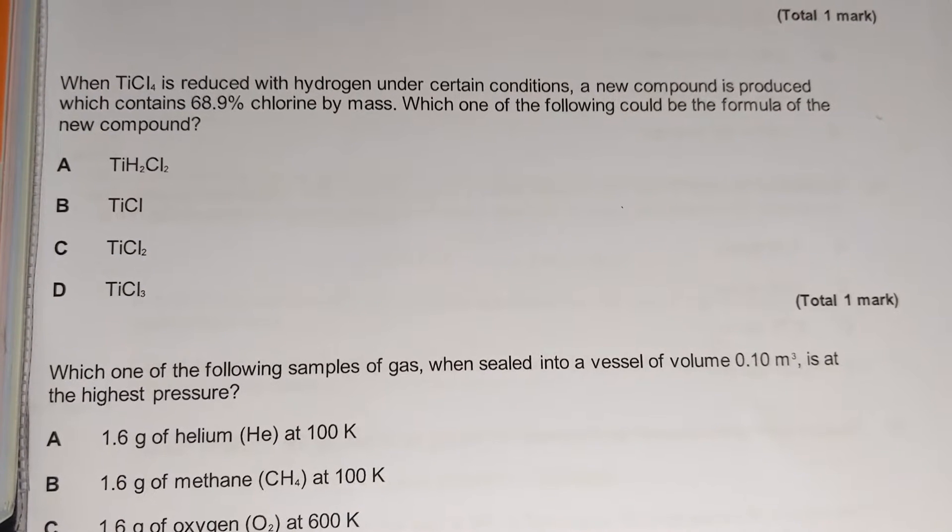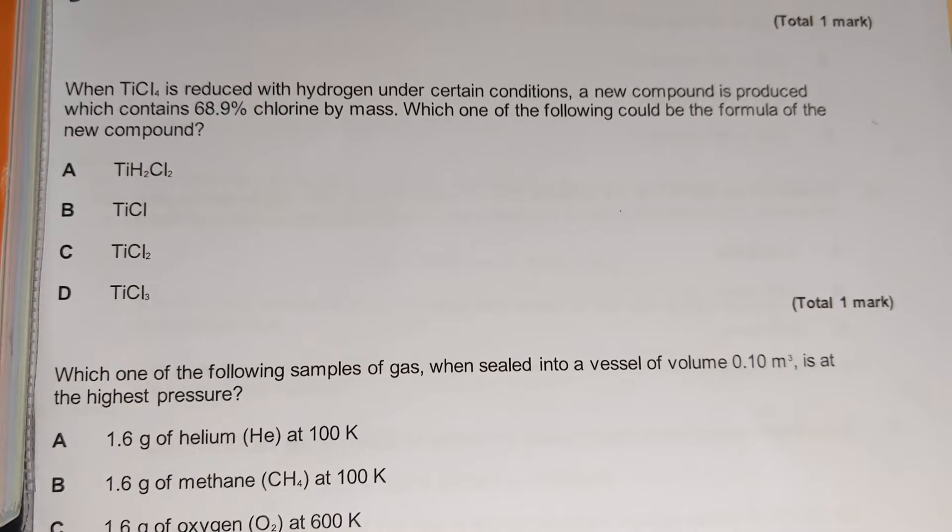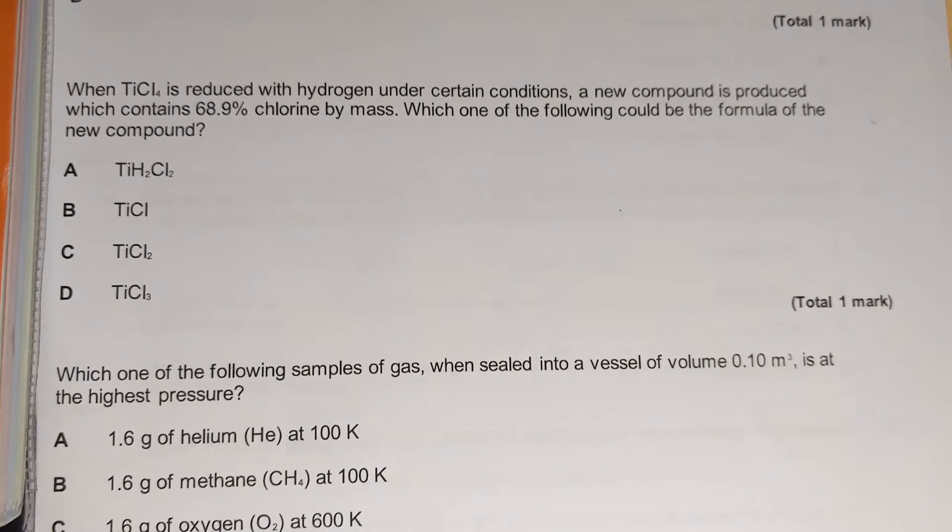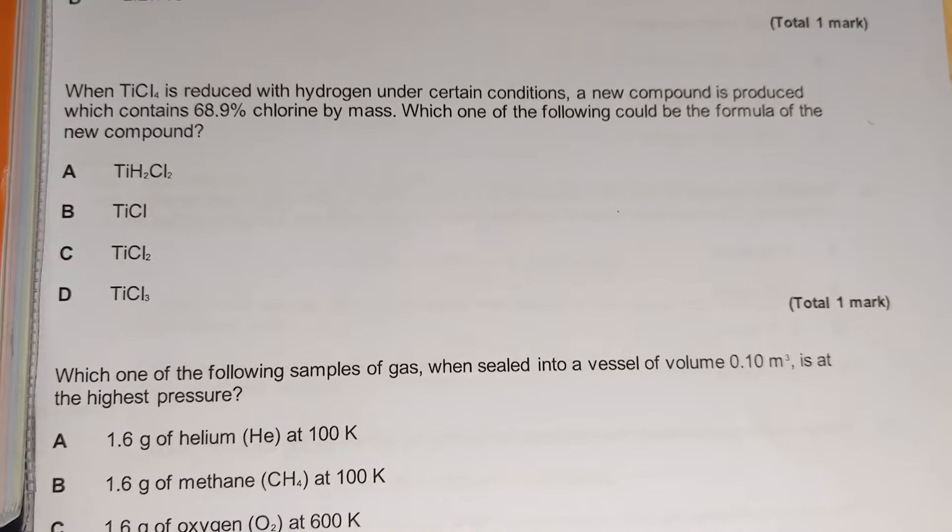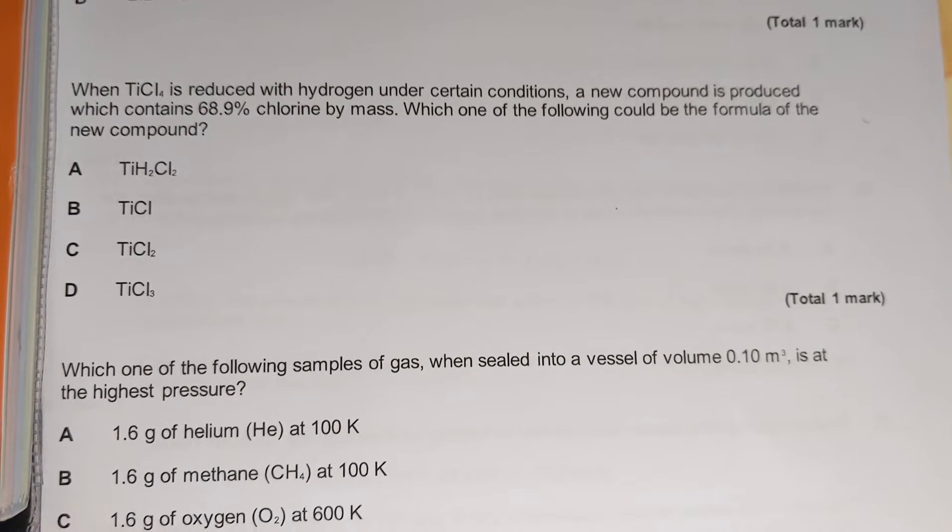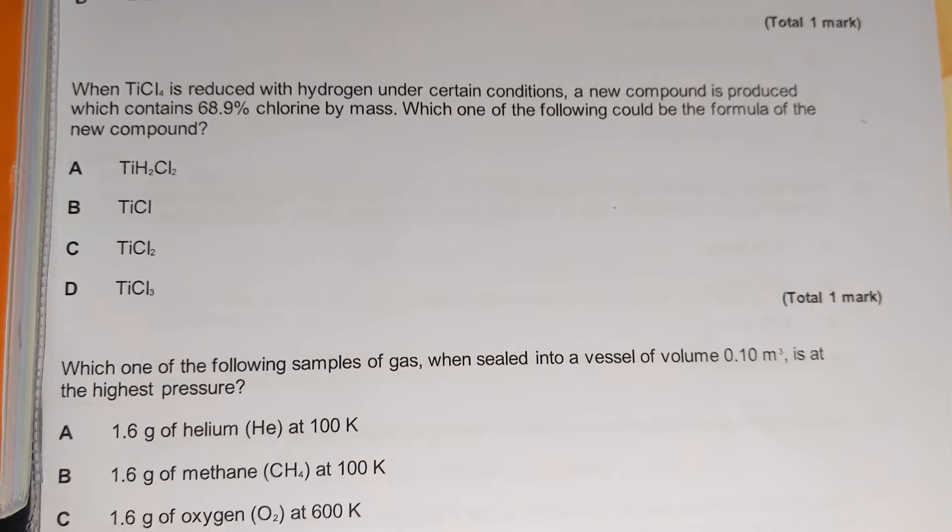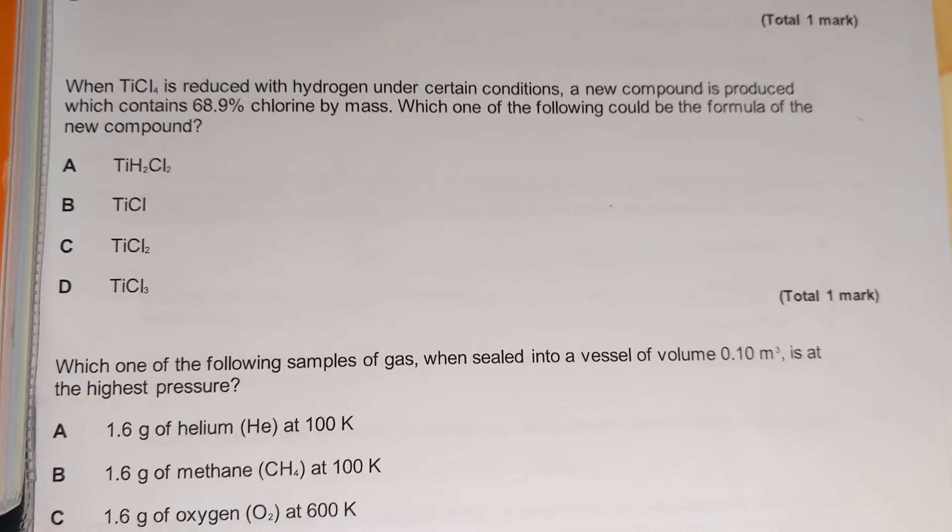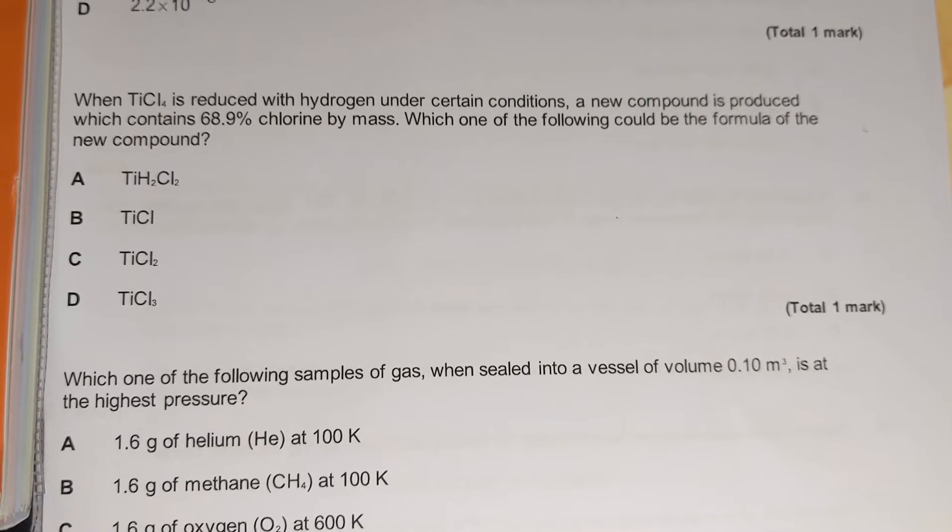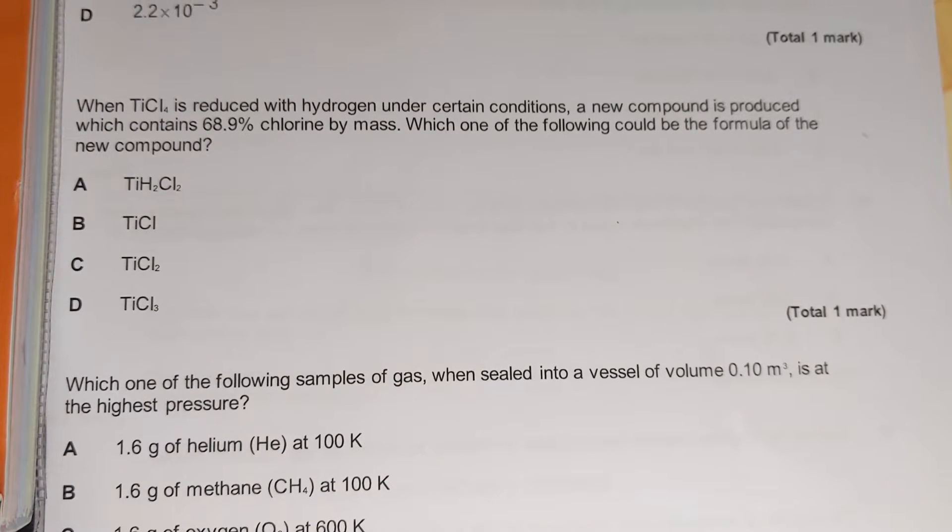So the next question, it's a percentage composition question. It says when titanium tetrachloride is reduced with hydrogen under certain conditions, a new compound is produced which contains 68.9% chlorine by mass. Which one of the following could be the formula of the new compound?